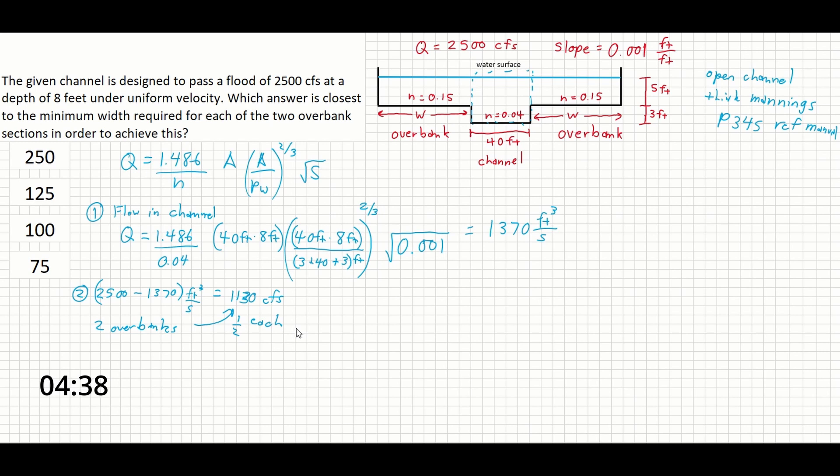So the way we could write this out is that 1130 cubic feet per second equals, so we're going to write out Manning's again, 1.486 over the Manning's n for the overbank is 0.15, so it's much rougher than the channel itself. Now the area here is going to be, we don't know the width, but we do know the height is 5, because that's what we need to keep the channel at a total depth of 8, which was asked by the problem. So we're going to say 5 times W here.